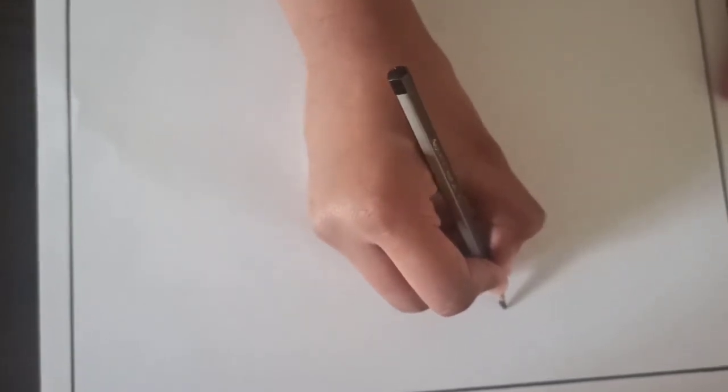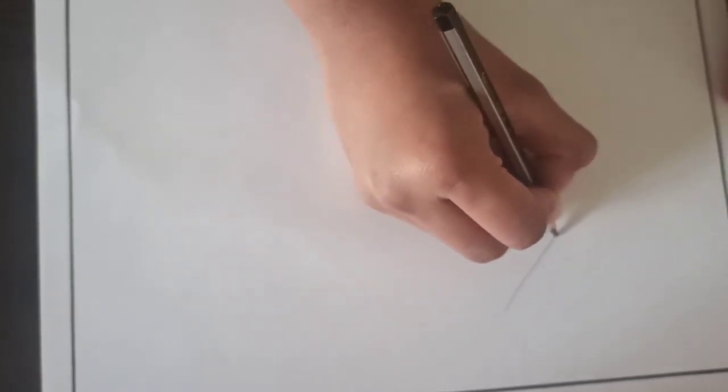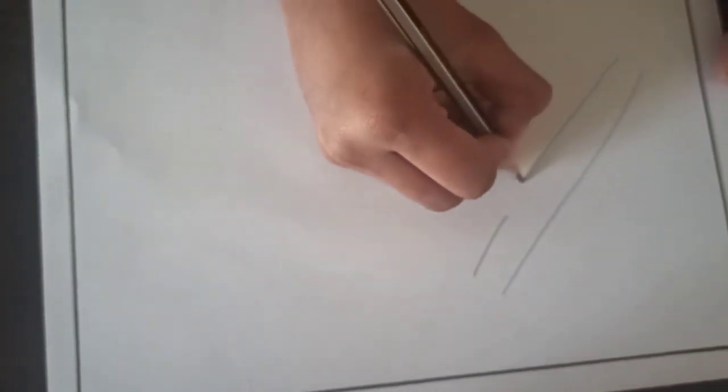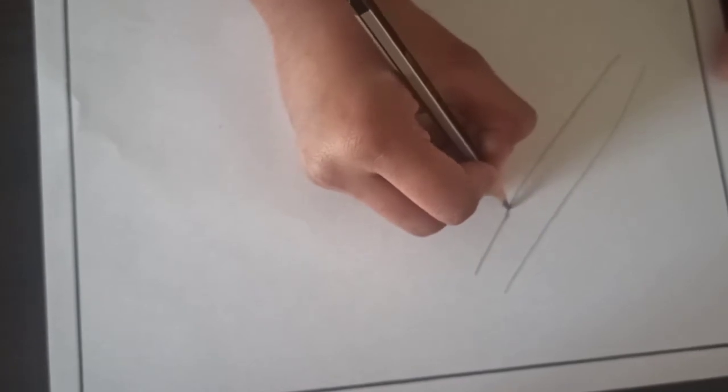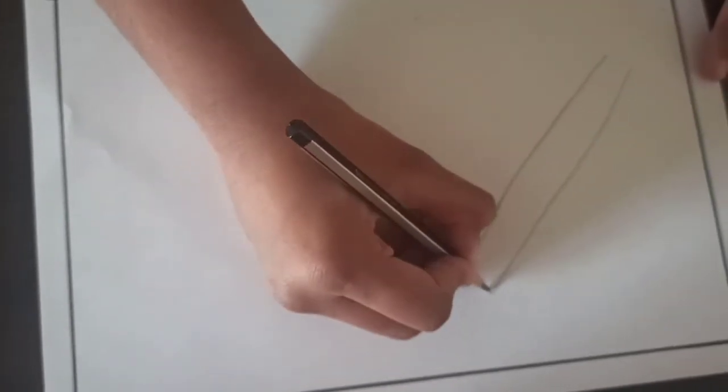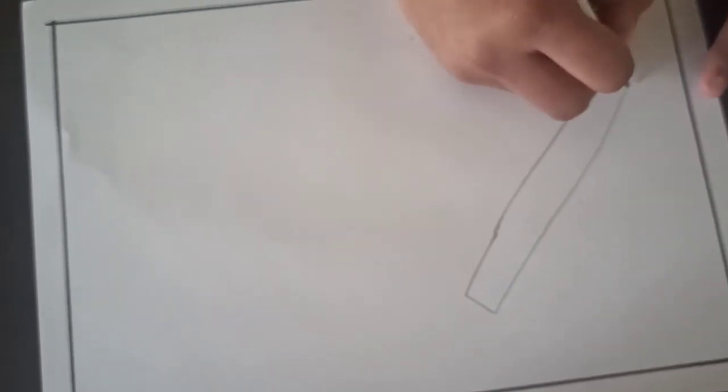So take one pencil and first you have to draw one slant line. Then leave some space and draw one more slant line like this. And then join that two slant lines. So like this, one kind of rectangle you have to draw but it is a long one.